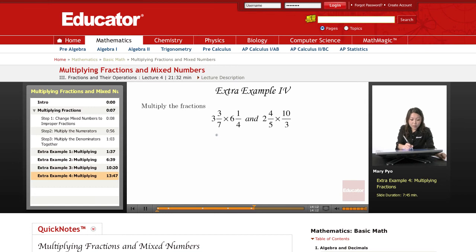So 3 and 3 sevenths, to change this to a mixed number, I take the denominator of 7. I'm going to multiply it to my whole number. 7 times 3, which is 21. And then you're going to add the numerator plus 3. So 7 times 3 is 21, plus 3 is 24.